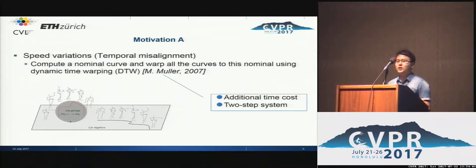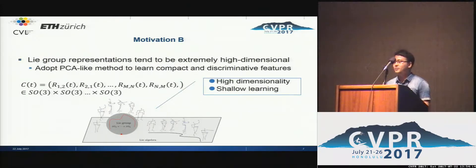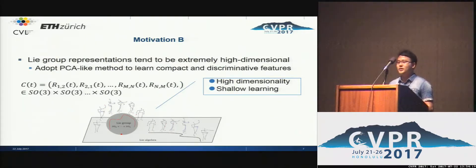There are two motivations for this work. The first is to address the speed variation issue. Commonly used dynamic time warping systems not only cost additional time, but are also relatively complex two-step systems. The other motivation is that Lie group representations tend to be extremely high-dimensional. Existing methods typically adopt PCA-like techniques that are shallow linear learning systems.